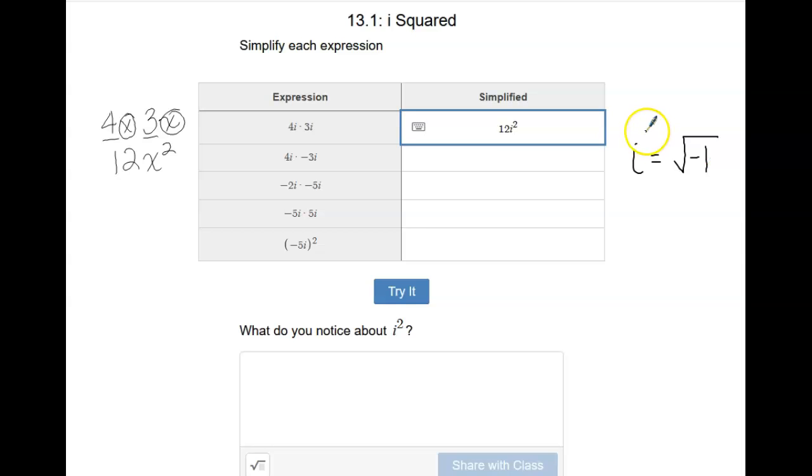So if we were to square that, i squared, if we square one side, we have to square the other side. And so really what we're saying is that i squared is the same thing as negative 1. So any time that you see an i squared, you can replace that with times negative 1 or add negative 1.